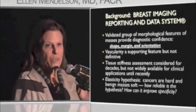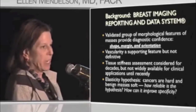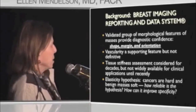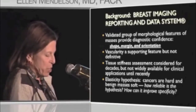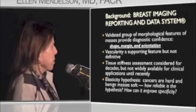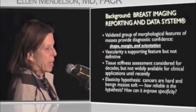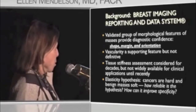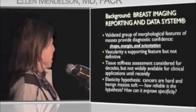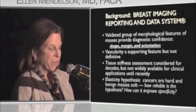For many years now, we have looked at tissue stiffness assessment, but it has not been, until relatively recently, widely available for clinical applications, and we're very happy now that it is. The hypothesis is simple: cancers are hard and benign masses are soft, and what our study hoped to establish is how reliable is this hypothesis and how can it improve the specificity.